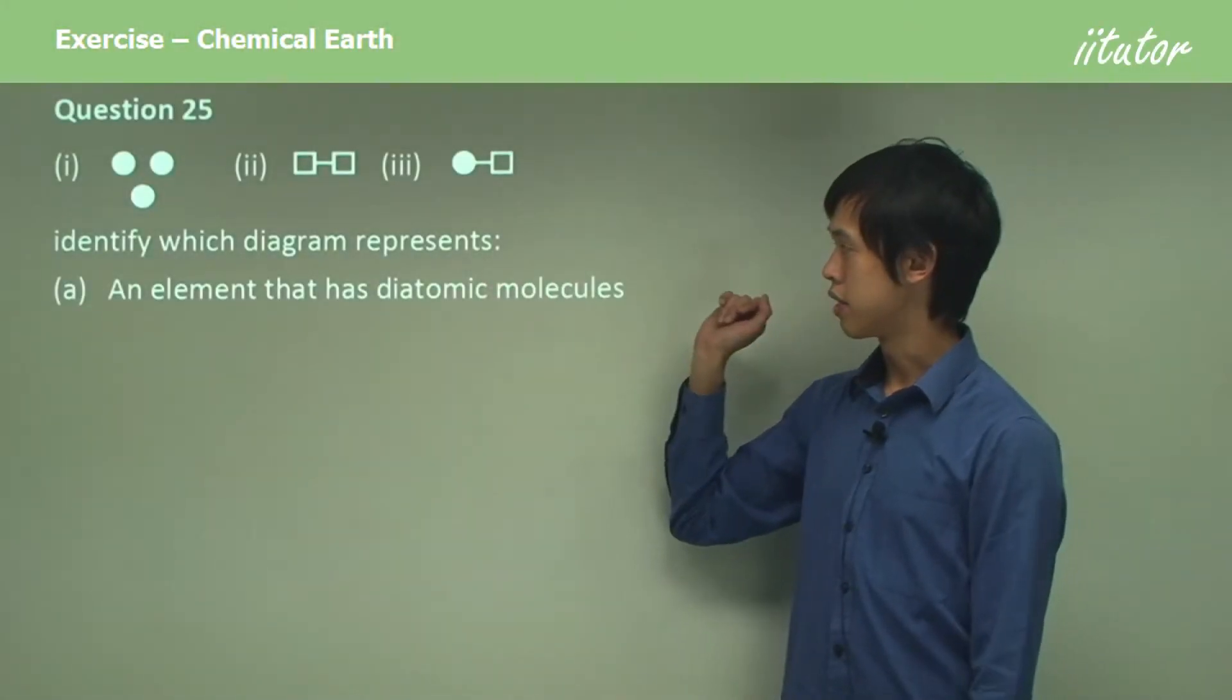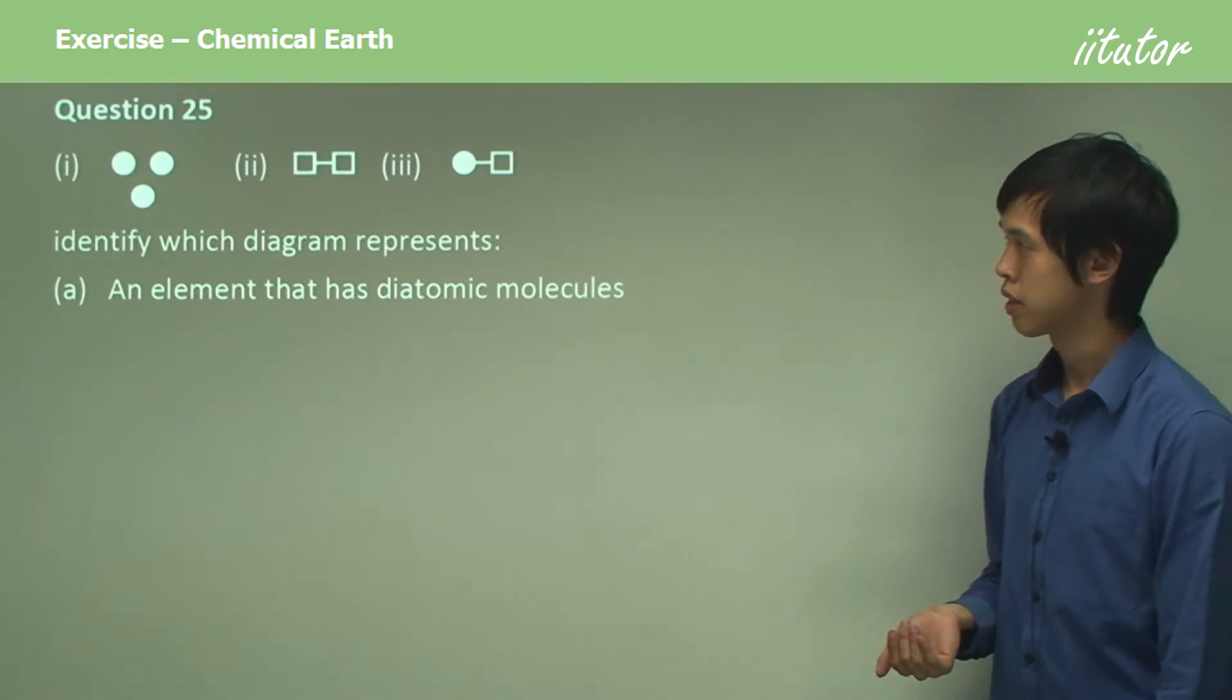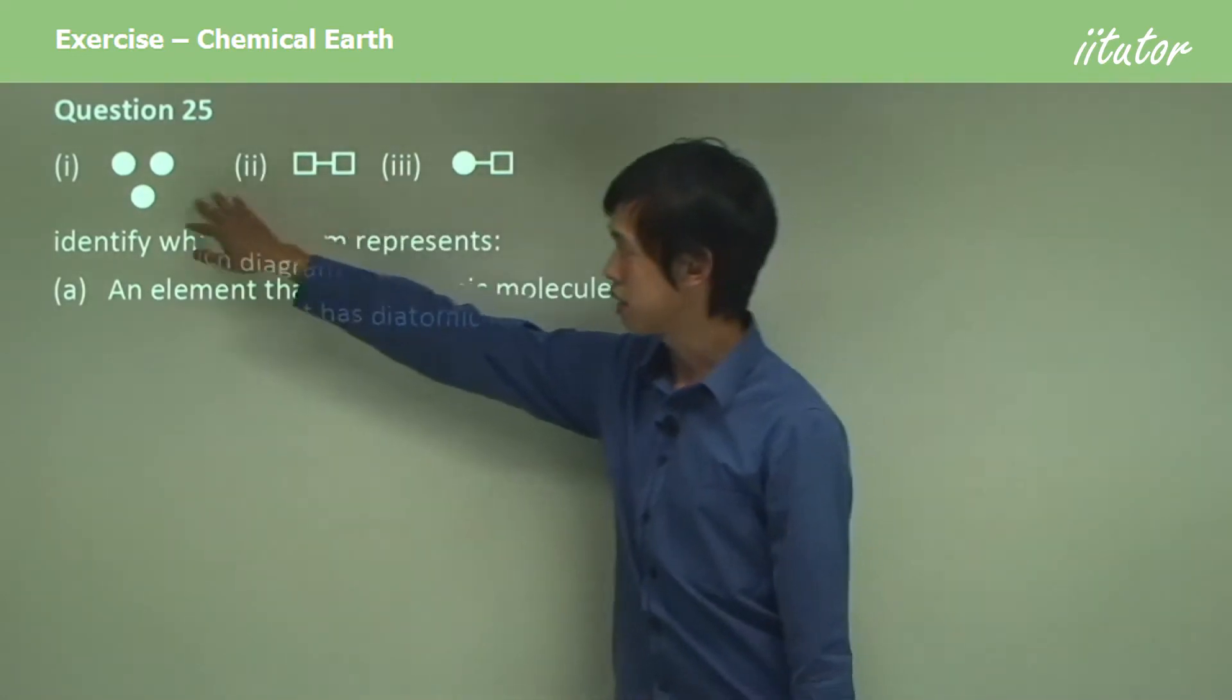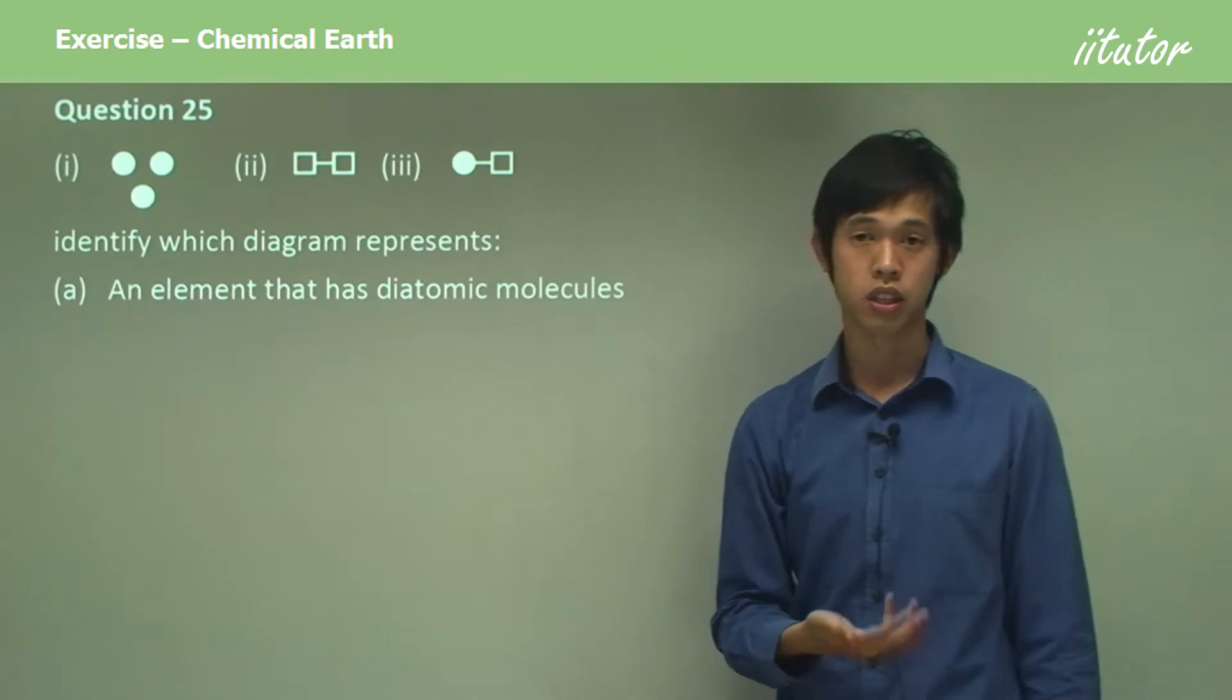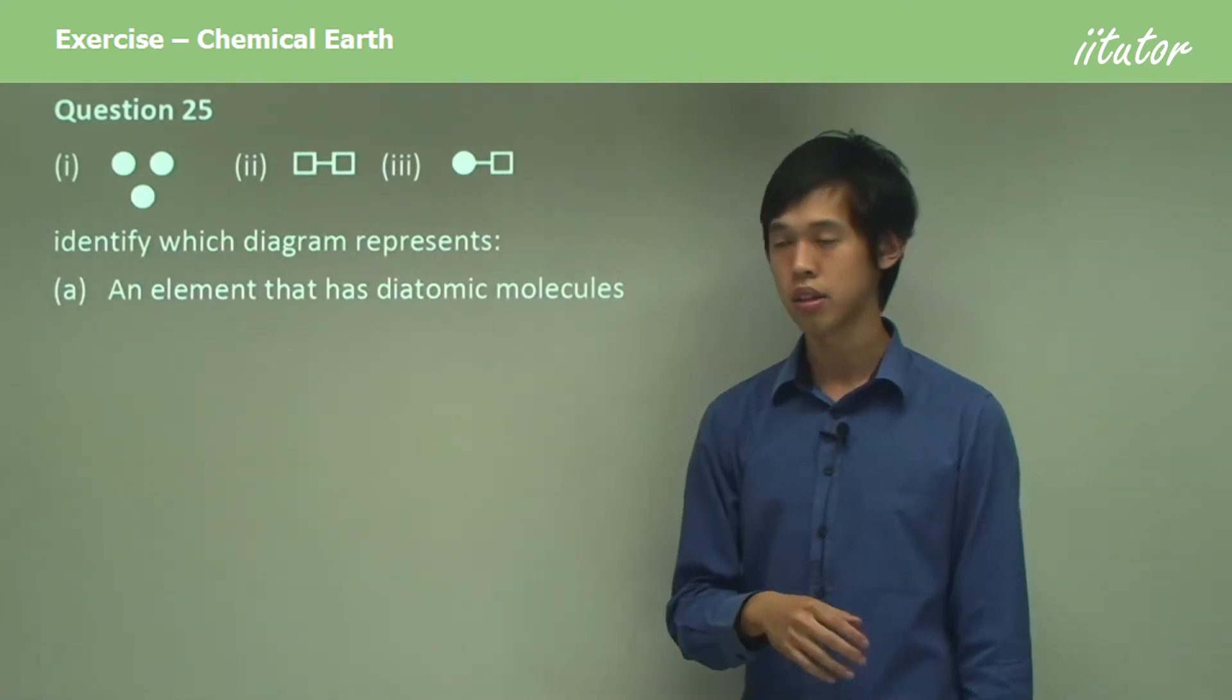Identify which diagram represents an element that has diatomic molecules. So which one of these is an element where the circle and the square are different atoms, different types of atoms? So which one is an element that has diatomic molecules?